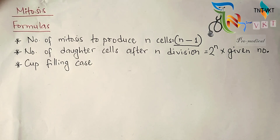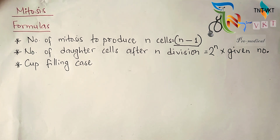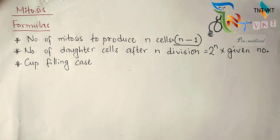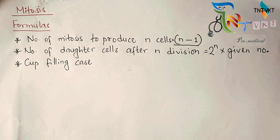Welcome to TNT Wikipedia's trick series. Today we will be discussing mitosis and meiosis problems, which are common numerical problems in biology. Starting with mitosis, the formulas are: number of mitotic divisions to produce n cells is equal to n minus 1. Number of daughter cells produced after n divisions in mitotic division is 2 to the power n into given number.